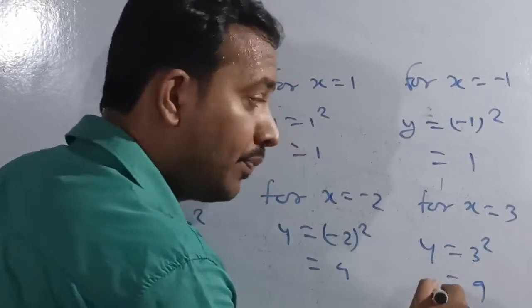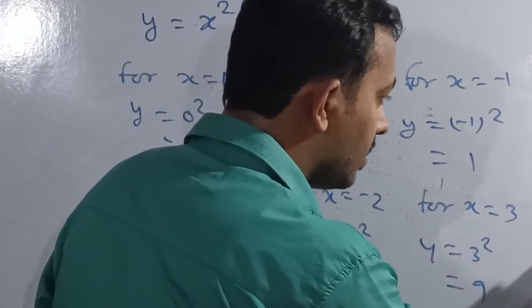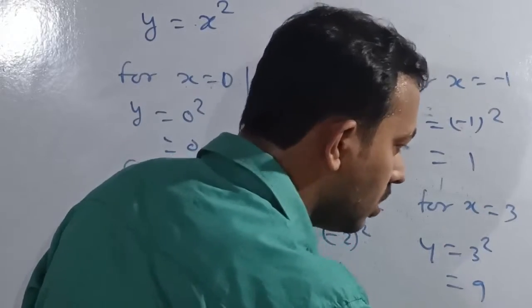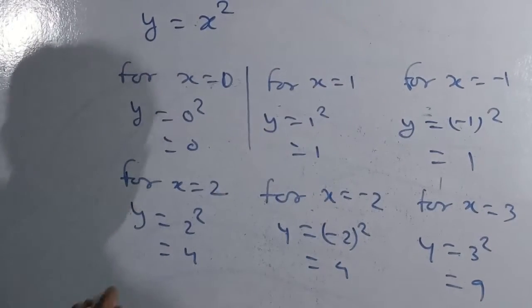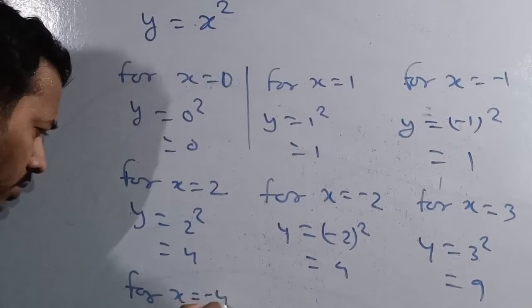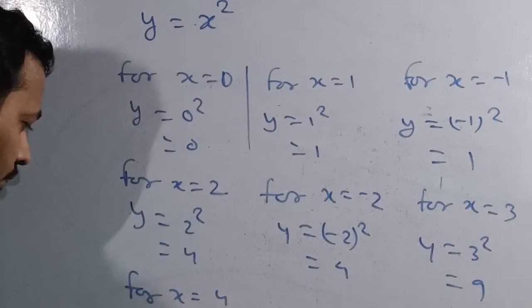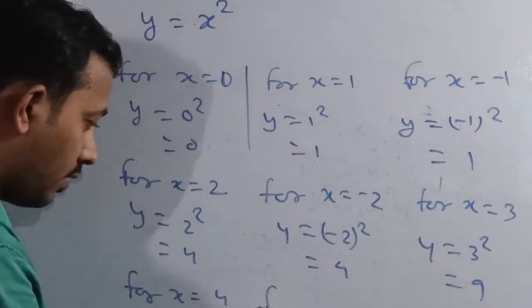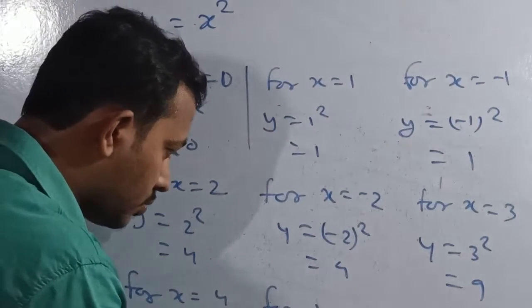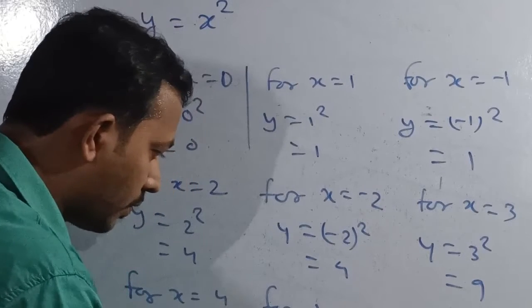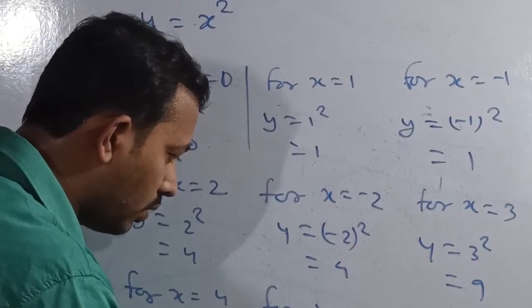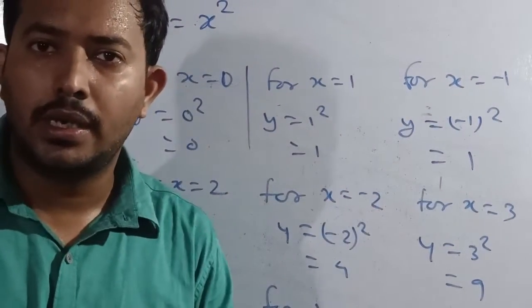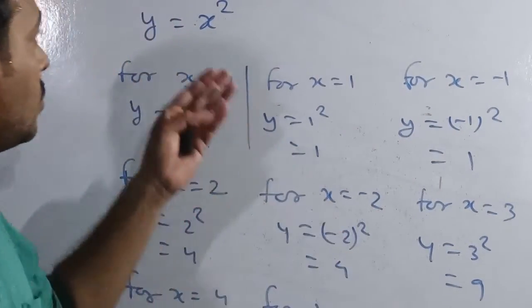For x equals minus three, we get minus three whole squared which is also nine. And for x equals plus four, we get 16. For x equals minus four, we have minus four whole squared, that is 16. This much is enough for getting the graph related to this.